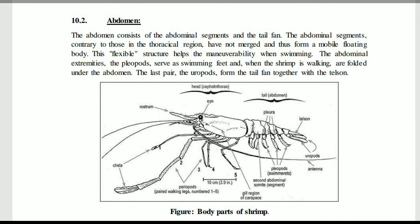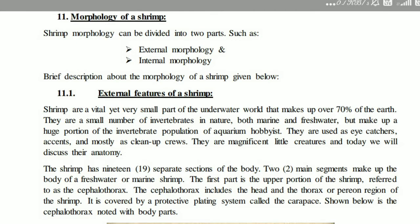The abdomen consists of abdominal segments and the tail fan. The abdominal segments, contrary to those in the thoracic region, have not fused and thus form a mobile, flexible body. This flexible structure helps the maneuverability when swimming. The abdominal extremities — the pleopods — serve as swimming feet and are folded under the abdomen when the shrimp is walking. The last pair, the uropods, form the tail fan together with the telson.